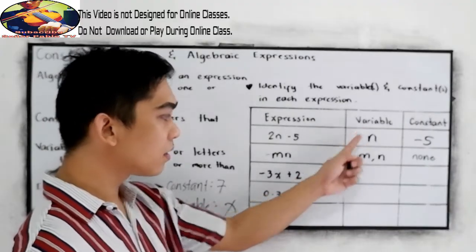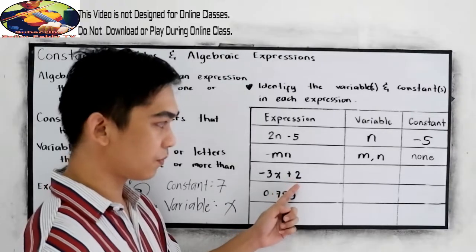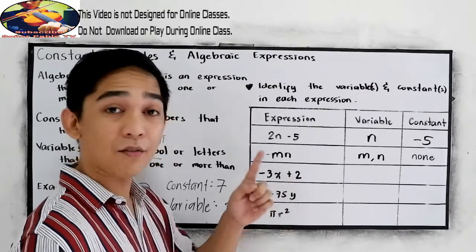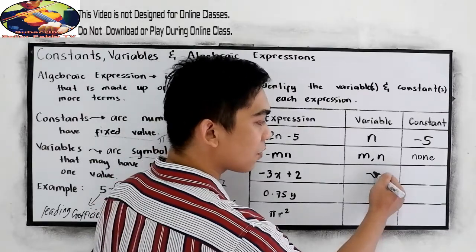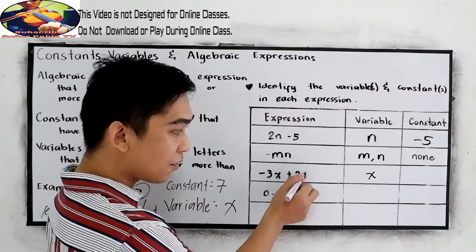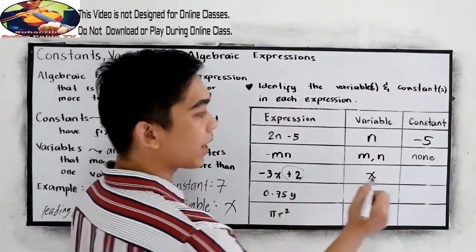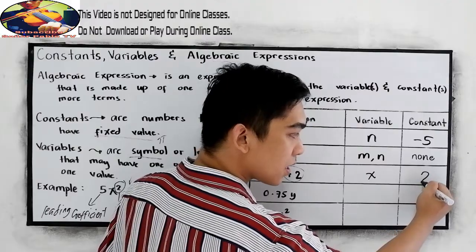Next, number 3. The given is negative 3x plus 2. So we have a letter, which is x. So write x in our variable. And for the constant, we have 2. So we need to write positive 2 or simply 2.